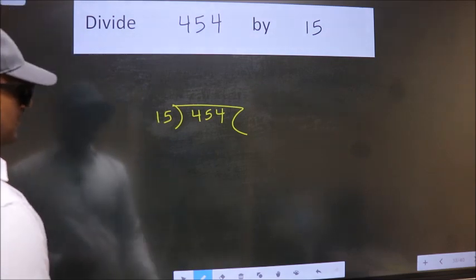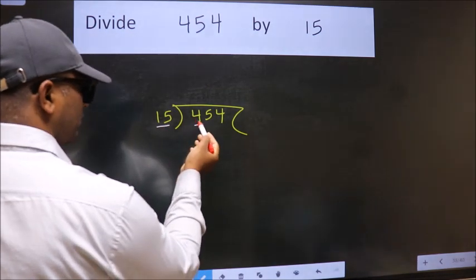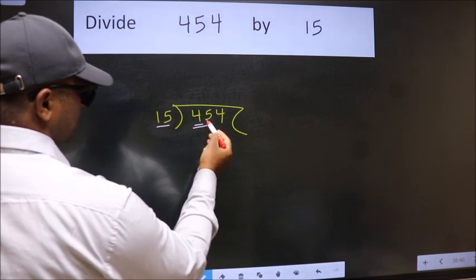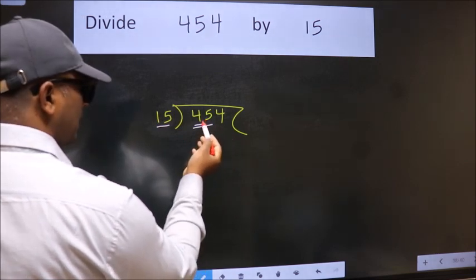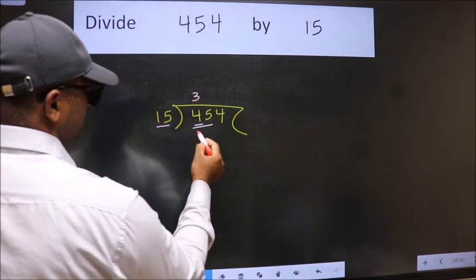Next, here we have 4. Here 15. 4 is smaller than 15, so we should take two numbers: 45. When do we get 45 in the 15 table? 15 threes, 45.